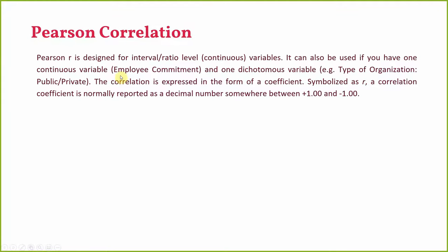Pearson R is the focus of today's session. It is designed for interval, ratio, or continuous variables. It can also be used if you have one continuous variable and one dichotomous variable — for example, gender or type of organization. Correlation is expressed in the form of a coefficient symbolized as R.